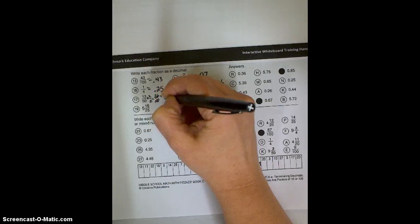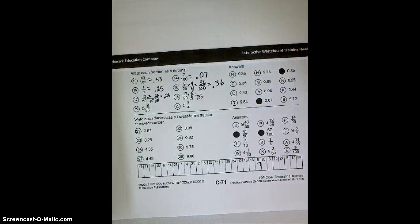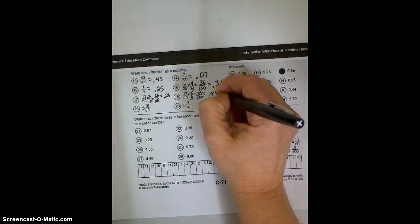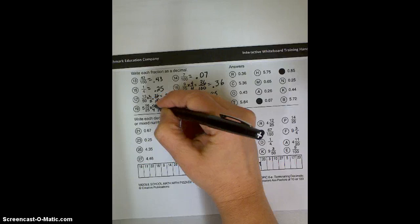This one is kind of an opposite of one we've done quite a bit. Multiply it by 5 over 5, so we get 20 times 5 is 100. 17 times 5 is 85, so that can be written as 0.85 or 85 hundredths. This one, I'm going to keep the whole number, but multiply by 4 over 4. So I get over 100. 6 times 4 is 24, carry the 2, so it must be 64. So 5.64.